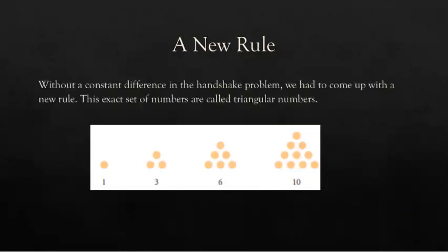So without a constant difference in this handshake problem, we had to come up with a new rule. And it was a little bit hard to figure out. But this exact set of numbers is actually called triangular numbers: 1, 3, 6, 10, 15, etc. If you look at the dots and how we can arrange them, they get arranged in triangles. 1 dot, 3 dots, 6 dots. If you've ever built towers, maybe with cups or Legos, you would have done this pattern. You know that 10, well, is what we use for bowling pins, but it makes a triangle.